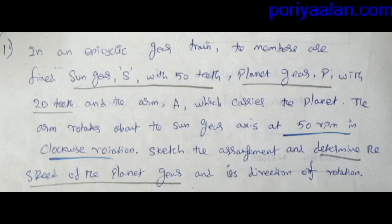Now the first sum: In this epicyclic gear train, the members are — fixed sun gear S with 50 teeth, planet gear P with 20 teeth, and arm A which carries the planet gear. The arm rotates about the sun gear axis at 50 RPM in the clockwise direction. Sketch the arrangement and determine the speed of the planet gear and its direction of rotation.